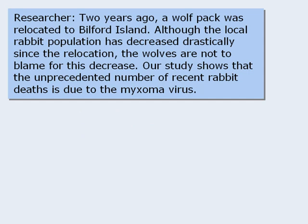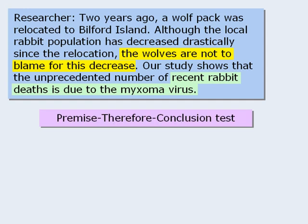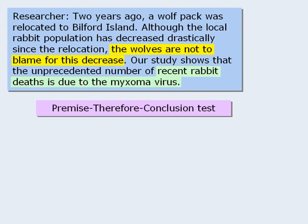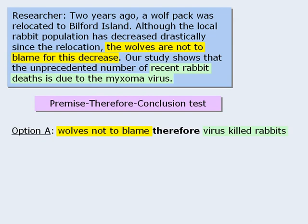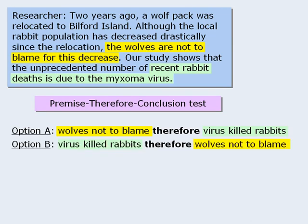Let's begin with the conclusion. Some students will say the conclusion is that the wolves are not to blame for the decrease in the rabbit population, and others will say it's that the decrease is caused by the virus. In situations where it's difficult to locate the conclusion, apply the premise-therefore-conclusion test. Option A: the wolves are not to blame, therefore the virus caused the deaths. Option B: the virus caused the deaths, therefore the wolves are not to blame. Option B makes more sense — so the conclusion is that the wolves are not to blame, and the virus information is a supporting premise. We might summarize the conclusion like this.